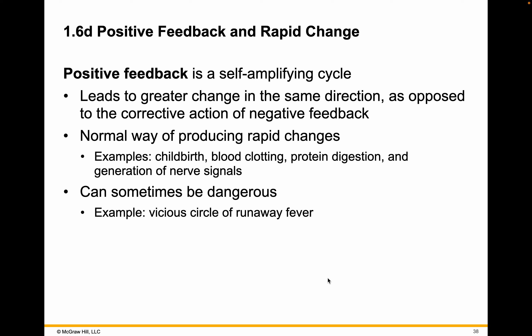There are a couple of places we will deal with this year where that is very important. When the signals to begin childbirth start, those signals amplify other signals and make the childbirth occur as quickly and safely as possible. Blood clotting — when you expose blood to the air, to something that makes it want to close the vessel, you want that to go as quickly as you possibly can. The signal of a clot pushes for more clots. There are other examples in protein digestion and generation of nerve signals, but the most common ones we will use during the year are childbirth and blood clotting.